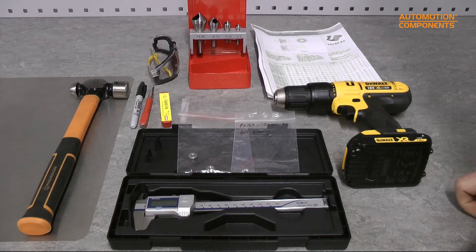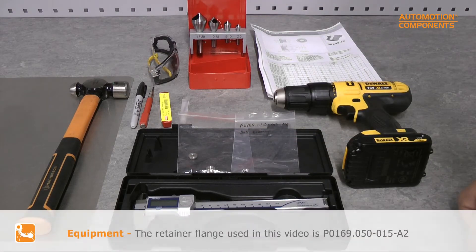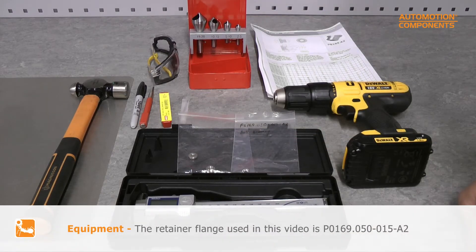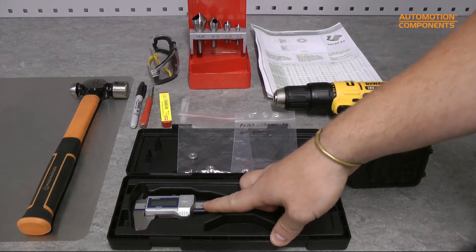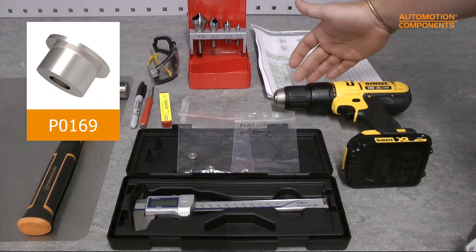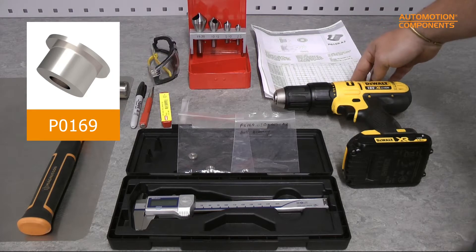Installing the retainer flanges PO169. These are the implements that we're going to be using to be able to install them accurately and efficiently. First we have a vernier by which we can essentially look at our spec sheet which is fundamental to make sure that we're well within those tolerances of installation.